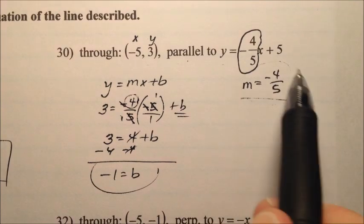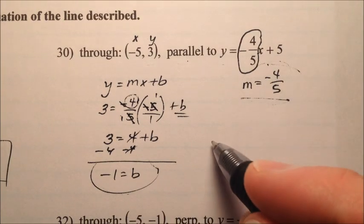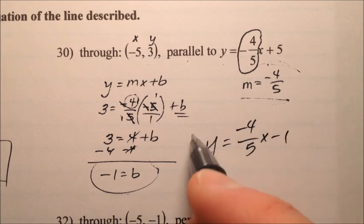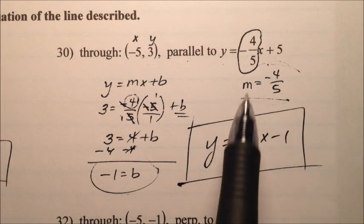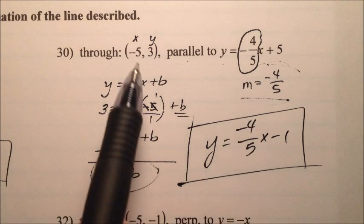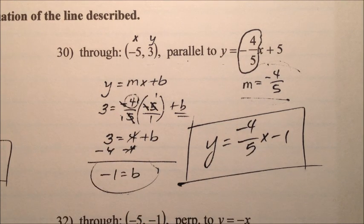So once we have our slope and our y-intercept, we can write the equation of our new line, which is parallel to our old line, but this new line passes through this point. So for number 30, we have y equals negative 4 fifths x minus 1.